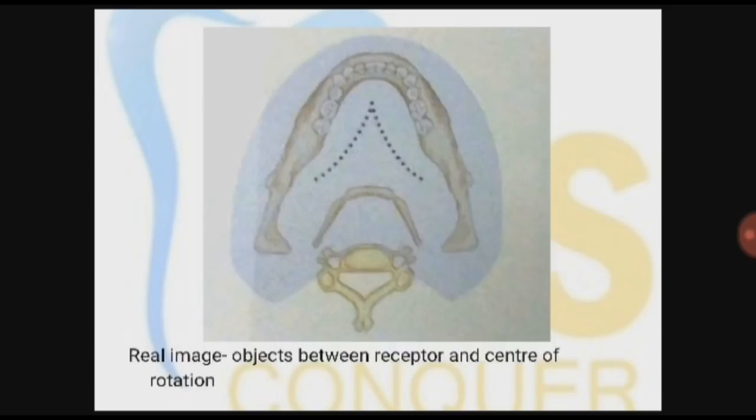There are three types of images formed: real images, double images, and ghost images. First, the real image is formed of the objects which are placed between receptor and center of rotation. Since the receptor never comes to the most posterior part, the most posterior part is left.